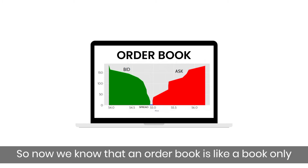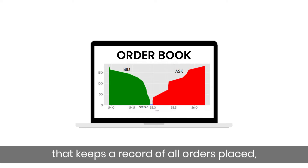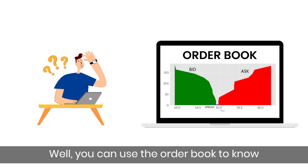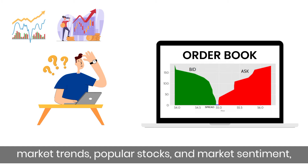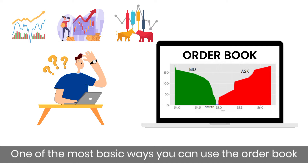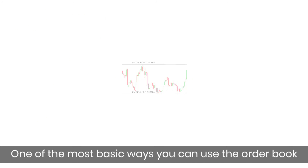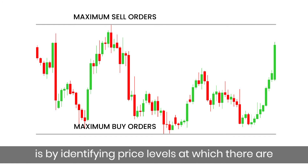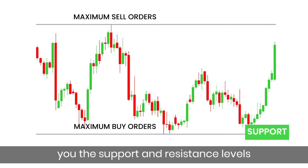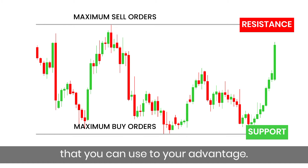So now we know that an order book is like a book that keeps a record of all orders placed. But how can it help traders and investors? Well, you can use the order book to know market trends, popular stocks, and market sentiments, which will help you make better decisions. One of the most basic ways is by identifying price levels at which there are maximum buy orders or sell orders, and this gives you the support and resistance levels that you can use to your advantage.